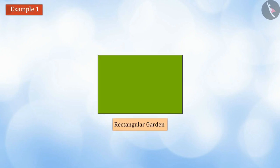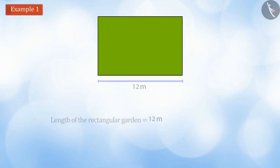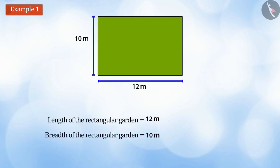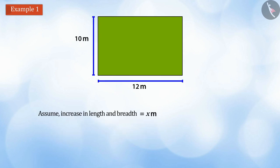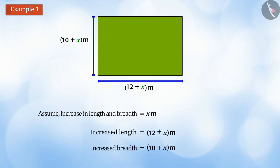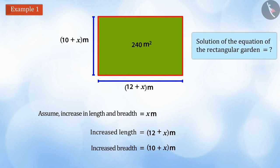A rectangular garden is 12 meters in length and 10 meters in width. If all of its dimensions are increased by equal number, the total area of the garden becomes 240 square meters. Find the solution of the equation of the rectangular garden.